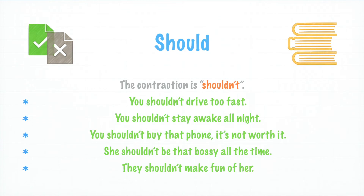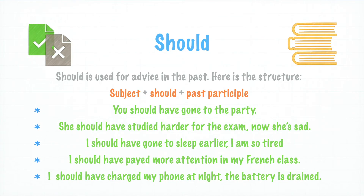Should is used for advice in the past. Here is the structure. Should se usa para consejos en el pasado. Aquí está la estructura. Subject plus should plus past participle. Sujeto más should más pasado participio.